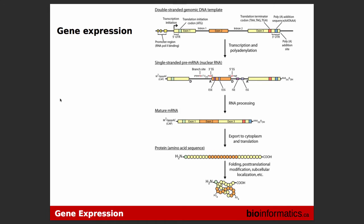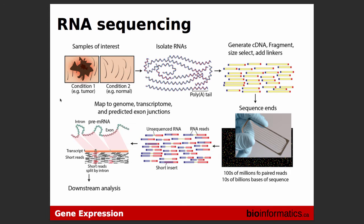In genetics, gene expression is considered to be the most fundamental level at which genotype actually gives rise to phenotype. Through gene expression, you learn what genes are expressed, what triggers genes to be turned on and off, how genes interact with each other in pathways, and why certain genes in certain cell types manufacture certain proteins. There are a variety of ways to measure gene abundance: qPCR, microarrays, northern blots, but lately a lot of studies have been using RNA-seq.